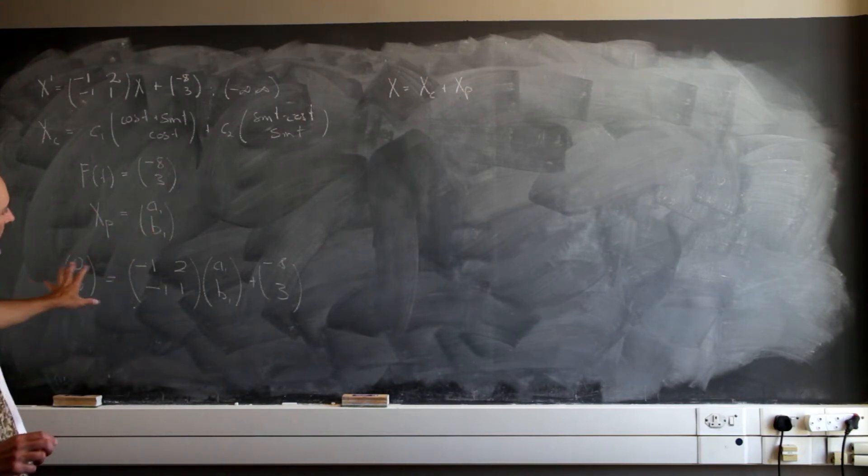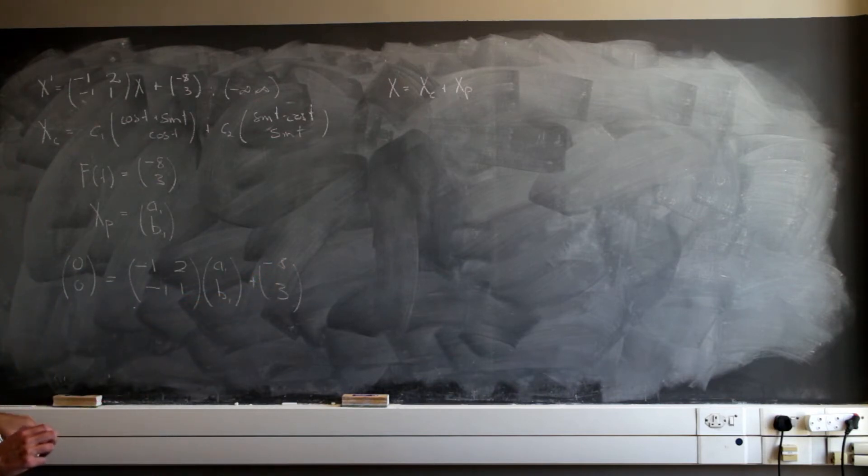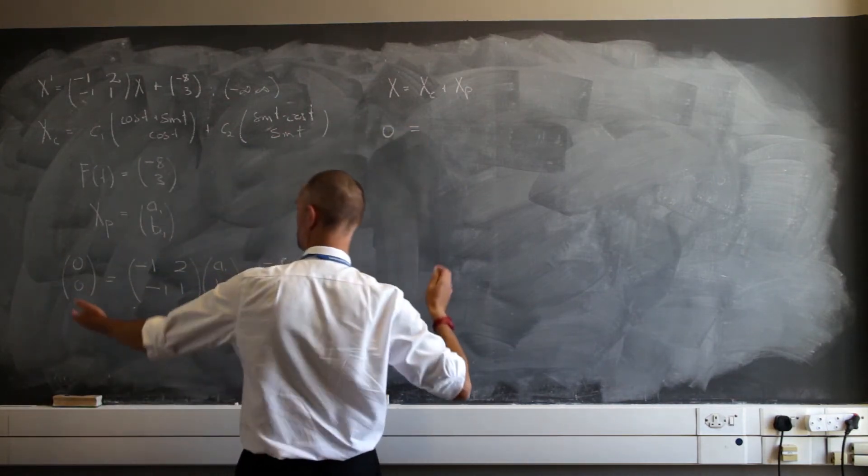So what am I going to end up with? I'm going to end up with, again, two equations in two unknowns. Let's do that, so in essence, writing it backwards, as we would normally do.